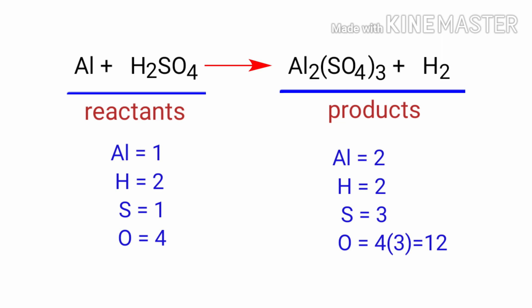On the products side, there are two Aluminium atoms, two Hydrogen atoms, three Sulphur atoms and twelve Oxide atoms.